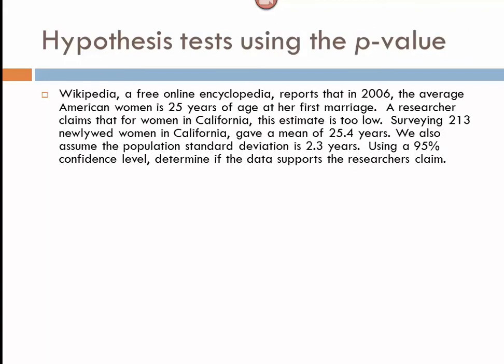Here's another example using the p-value approach. Wikipedia reports that in 2006, the average American woman is 25 years of age at her first marriage. A researcher claims that for women in California, this estimate is too low. Surveying 213 newlywed women in California gave a mean of 25.4 years. Assuming a population standard deviation of 2.3 years from previous studies, and using a 95% confidence level, determine if the data supports the researcher's claims.